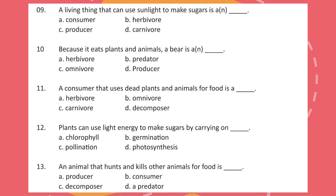Question 11: A consumer that uses dead plants and animals for food is a? Question 12: Plants can use light energy to make sugar by carrying on? Question 13: An animal that hunts and kills other animals for food is?